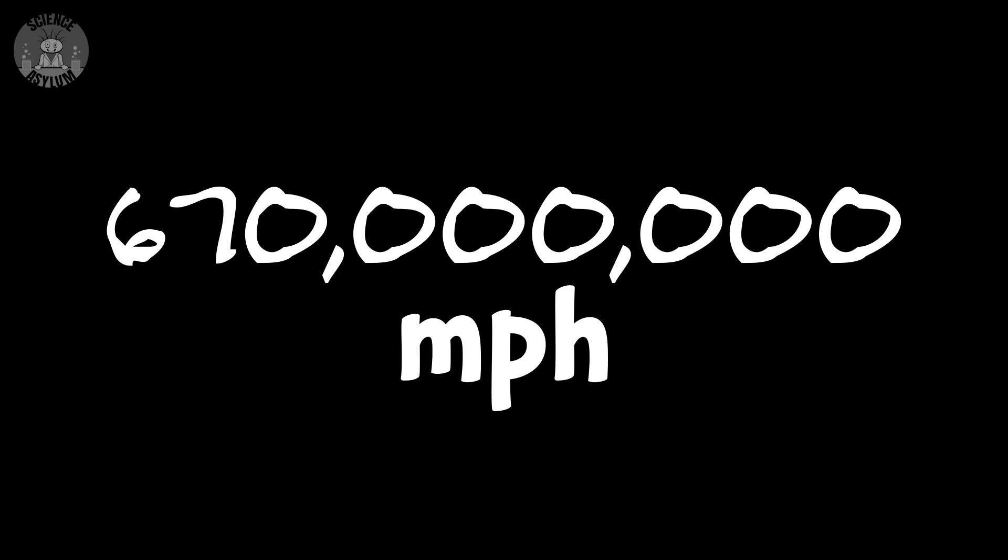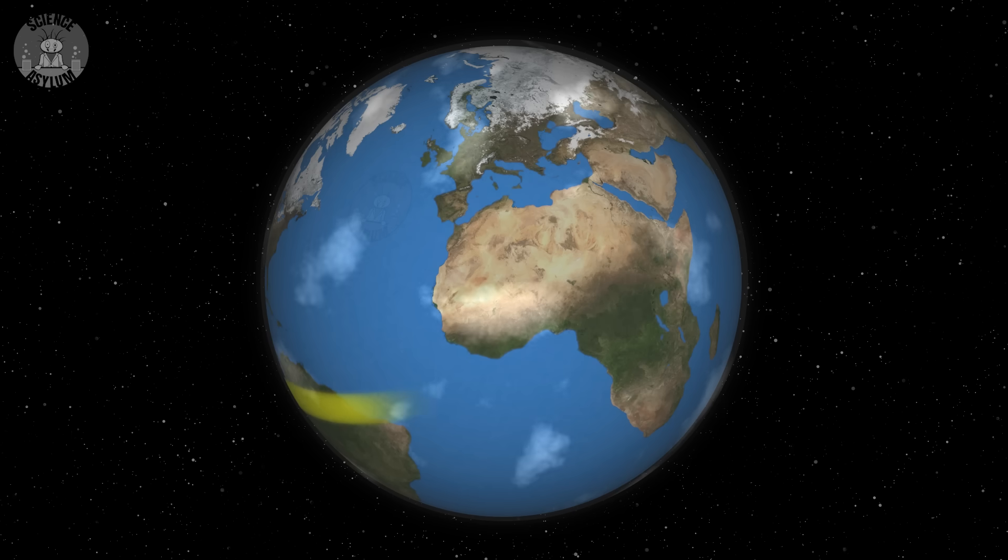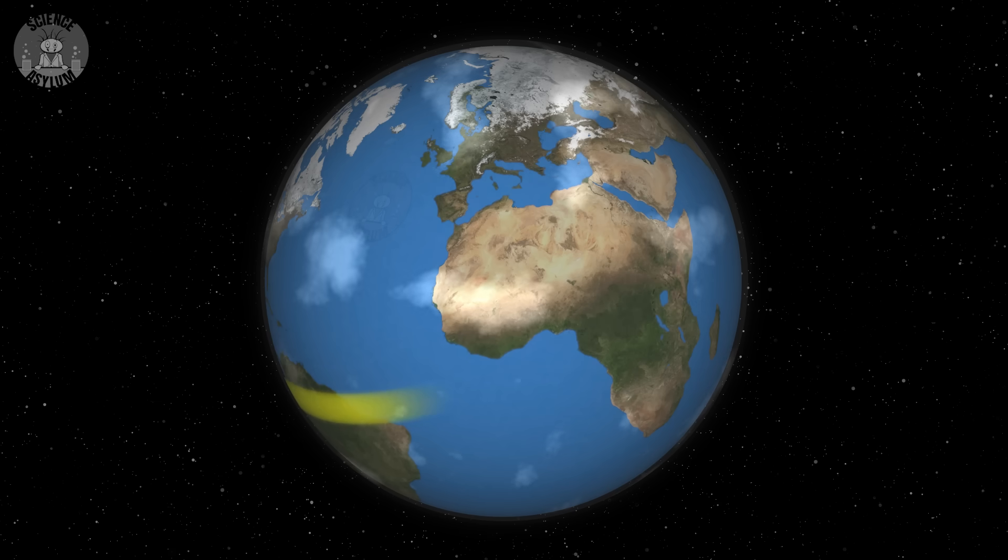We all know light takes time to get places, right? It does travel at 300 million meters per second. That's 30 centimeters per nanosecond, or about 670 million miles per hour. Light could travel around the Earth 7.5 times in a single second.